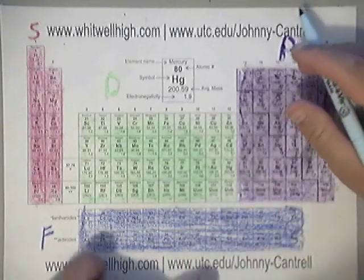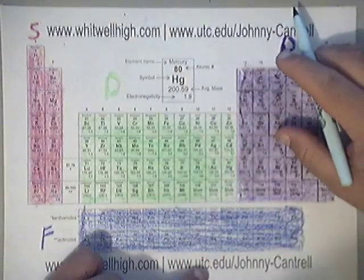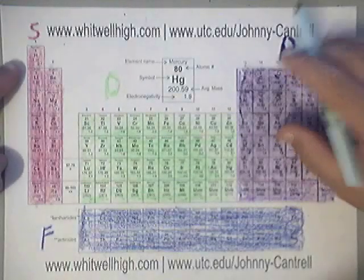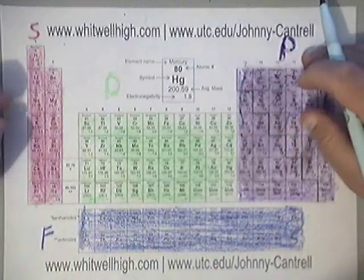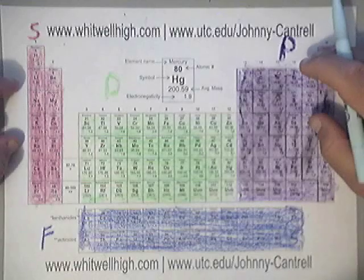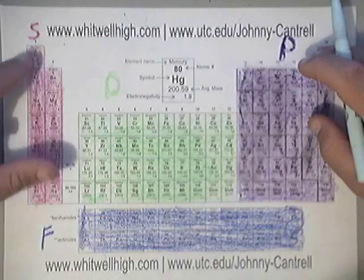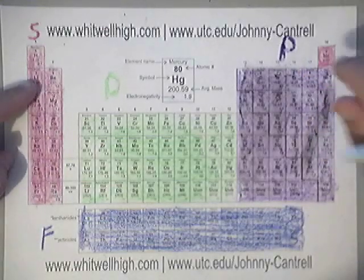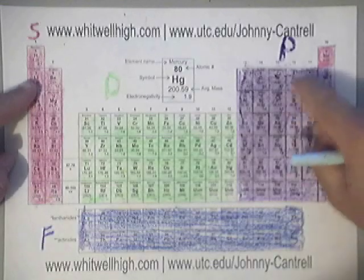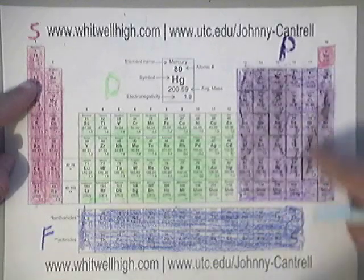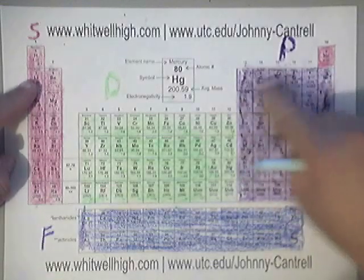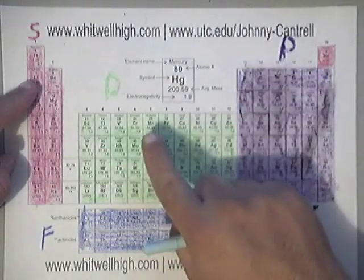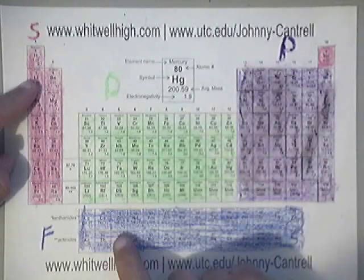In order to begin understanding the periodic table, along with the electronic configurations, you've got to understand that the periodic table is sectioned off into four sections. You have the S block, which is this pink color here. You have the P block, which is this purple color. Then you have D, and then you have F.